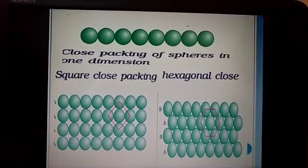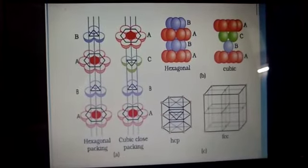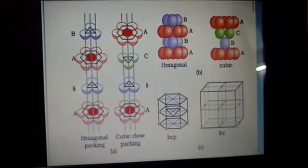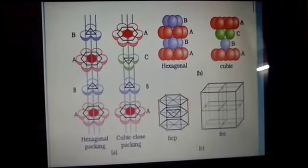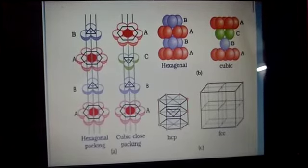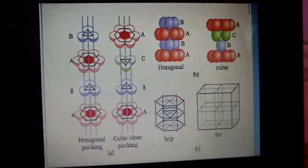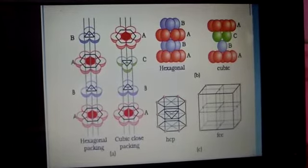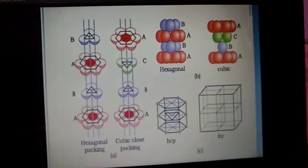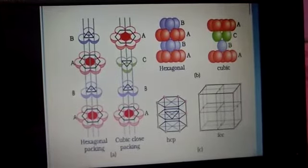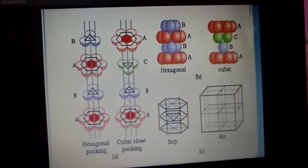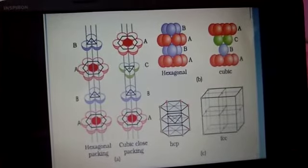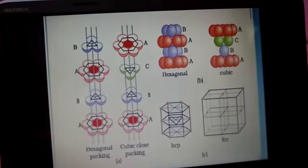Hexagonal close packing gives more efficient packing in two dimensions. In three-dimensional hexagonal close packing, the first layer A is placed under the second layer B, and the third layer repeats the first layer A. One atom is in contact with six atoms of the same layer, three atoms of layer B above, and three atoms of layer B below — giving a coordination number of 12.